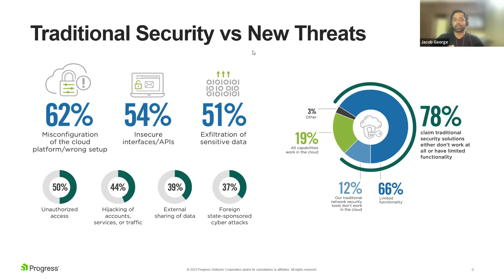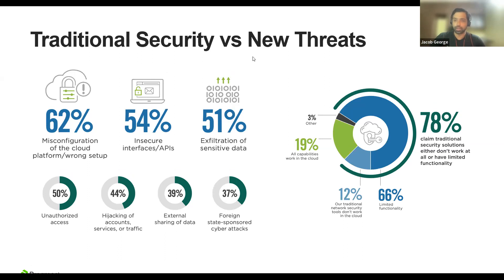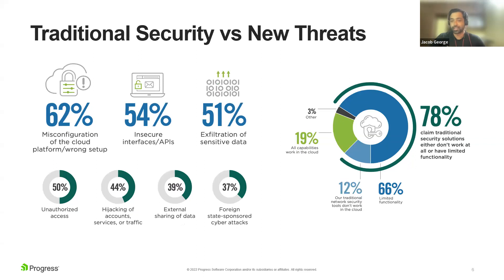The entire scenario has changed — how people are actually using cloud. Cloud adoption has become really high; 76% of organizations use two or more cloud service providers. From the ISC squared report, a majority of cybersecurity professionals have identified misconfiguration as being one of the major security threats. We also have insecure interfaces and exfiltration of sensitive data. And 78% of cybersecurity professionals have admitted that whatever traditional security solutions and tooling they had, it doesn't work for cloud infrastructure — it's either limited or completely not viable.